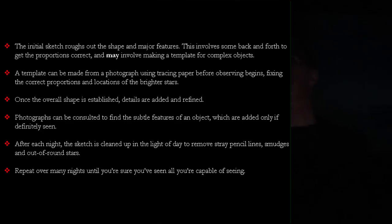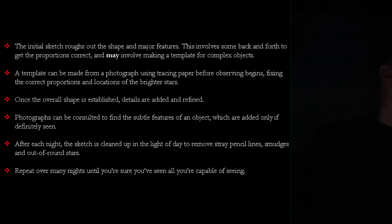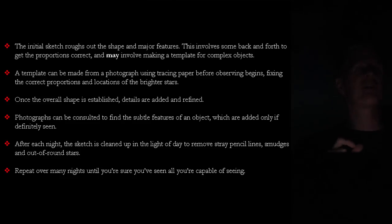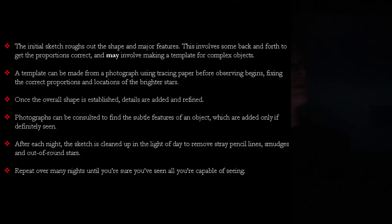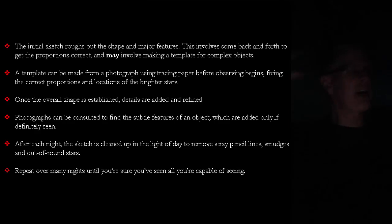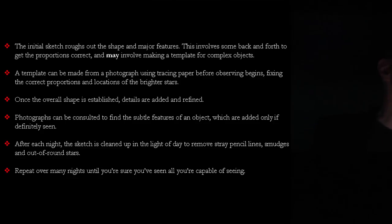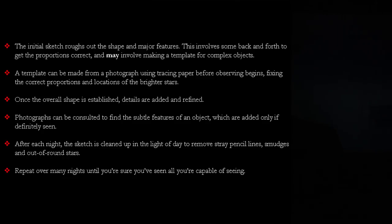There are a couple of times when I've made a template using tracing paper over a photograph, tracing the position of the bright stars — much in the same spirit that John Herschel used his micrometer to measure star positions. This can really help for very large objects with a lot of stars to get proportions correct. It's like downloading a Saturn template from the internet so you can draw the globe and the orientation of the rings — if you've tried to draw Saturn freehand, that's a tough nut. Once I get the overall shape, I start adding details over many nights, consulting photographs for subtle details to see if I can find them.